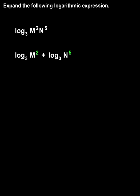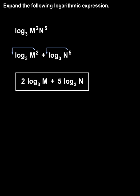Next, notice that each logarithm has a power inside the logarithm. And remember that our third law of logarithms states that if we have a power inside a logarithm, we can move the exponent to the front of the logarithm. So we have 2 times log base 3 of m plus 5 times log base 3 of n.